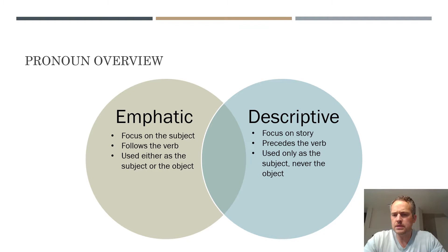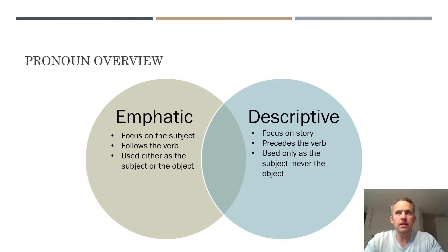In English, I is a pronoun, me is a pronoun, you is a pronoun — they, he, she, it, those are all pronouns. In Samoan, there are pronouns obviously as well, but they're actually a lot more intricate than they are in English. Before we get into that, there are these two families: emphatic versus descriptive.